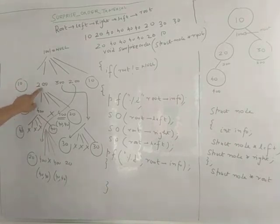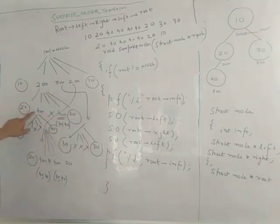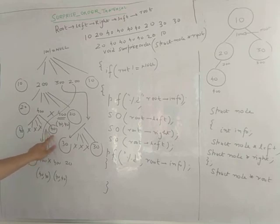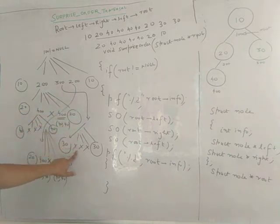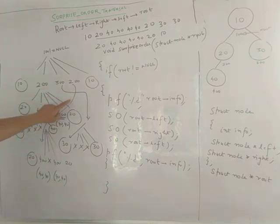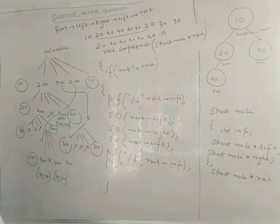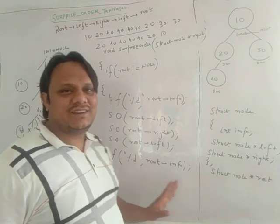To summarize: 100->info is 10, left is 200, right is 300, left again is 200, info is 10. Solving 200: info 20, left 400, right null, left 400, info 20. Solving 400: info 40, left null, right null, left null, info 40 — giving 40 and 40. Solving 300: info 30, no left, no right, no left, info 30. So final answer is: 10, 20, 40, 40, 40, 40, 20, 30, 30, 20, 40, 40, 40, 40, 20, 10. Thank you so much.